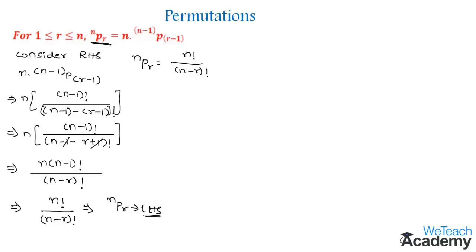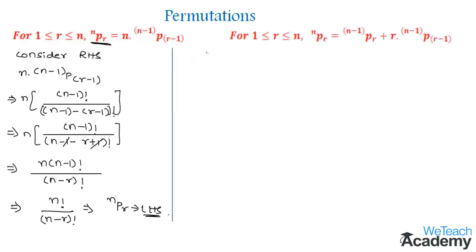Now let us prove the second theorem. For 1 ≤ r ≤ n, nPr is equal to (n-1)Pr plus r into (n-1)P(r-1). First let us consider the RHS: (n-1)Pr plus r into (n-1)P(r-1).